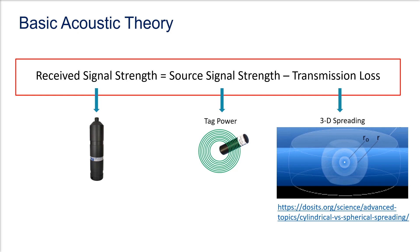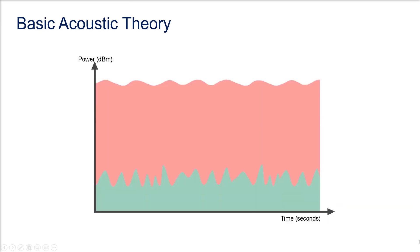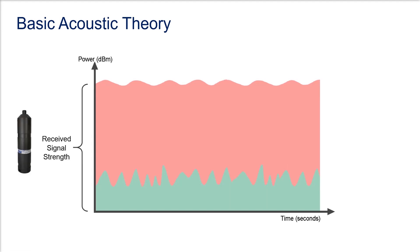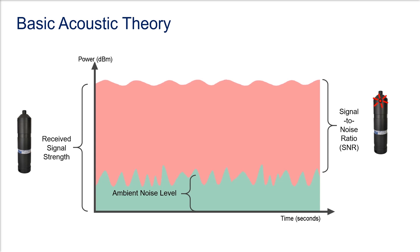The main source of transmission loss in acoustic telemetry systems is three-dimensional spreading of the signal — the further the signal travels, the weaker it gets. In order for the received signal to result in a detection, it must be strong enough to overcome any ambient noise that the receiver is also hearing. The difference between the received signal strength and the ambient noise level is called the signal-to-noise ratio, or SNR. When SNR is adequate, the acoustic transmission is detected.